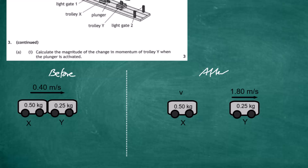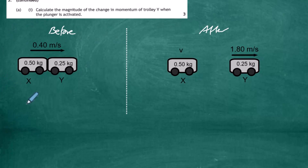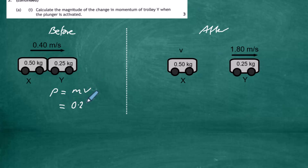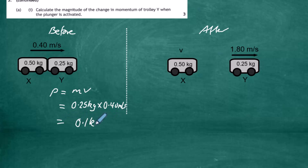After the plunger is activated, trolley Y moves at 1.8 meters per second to the right with a mass of 0.25 kilograms. We focus only on trolley Y and calculate its momentum before the plunger activates. Momentum before equals mass times velocity: 0.25 kilograms multiplied by 0.4 meters per second to the right, giving a momentum of 0.1 kilogram meters per second.